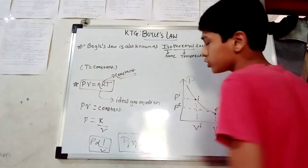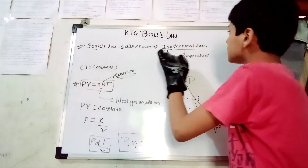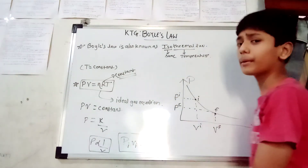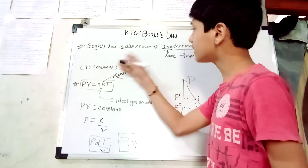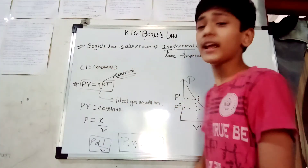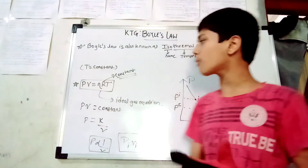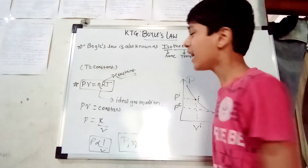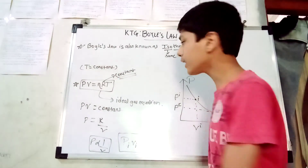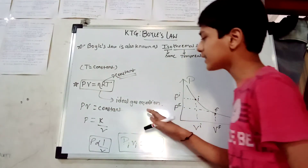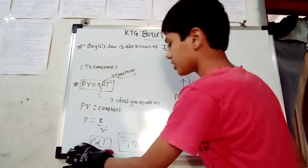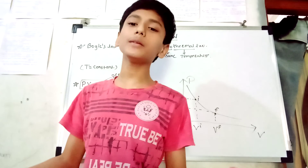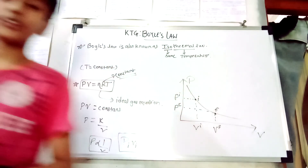So to summarize: Boyle's law is also known as the isothermal law, where 'iso' means same and 'thermal' means temperature, so temperature is constant. From the ideal gas equation PV = nRT studied in Class 11 Chemistry, Chapter 'States of Matter,' we conclude that pressure is inversely proportional to volume. Thank you for watching the complete video.